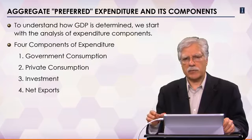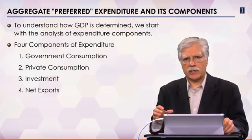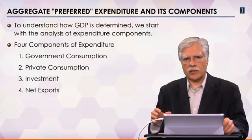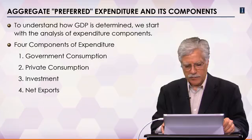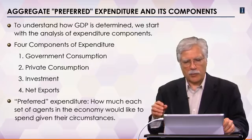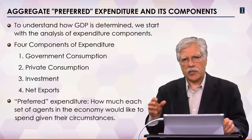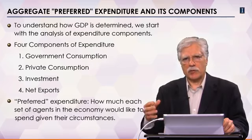We've discussed this in a previous course and discovered that it's convenient to divide up expenditure into four categories: government expenditure, private consumption, investment, and net exports. By preferred expenditure, I mean amounts that people would like to spend given their circumstances.